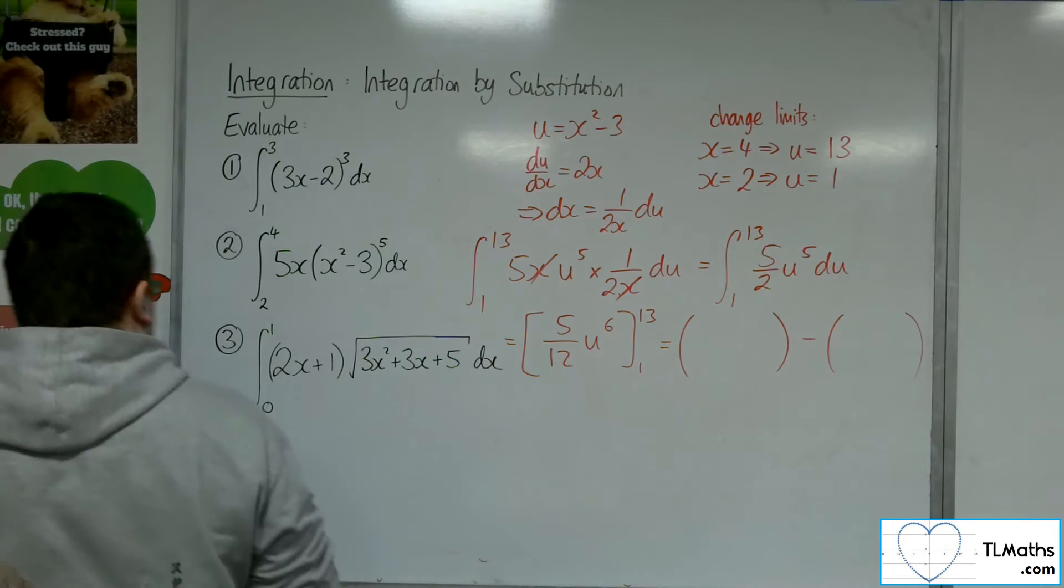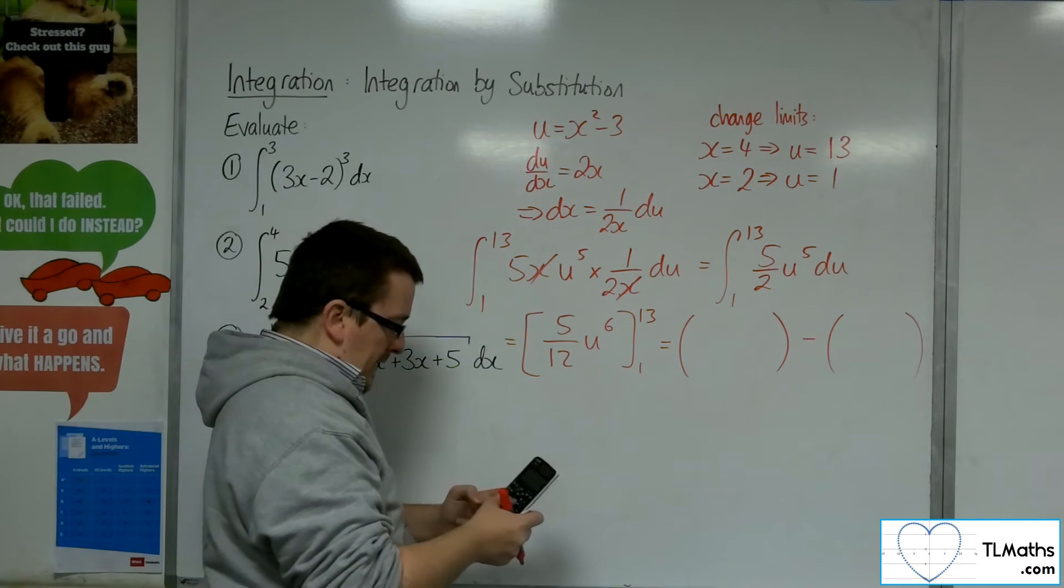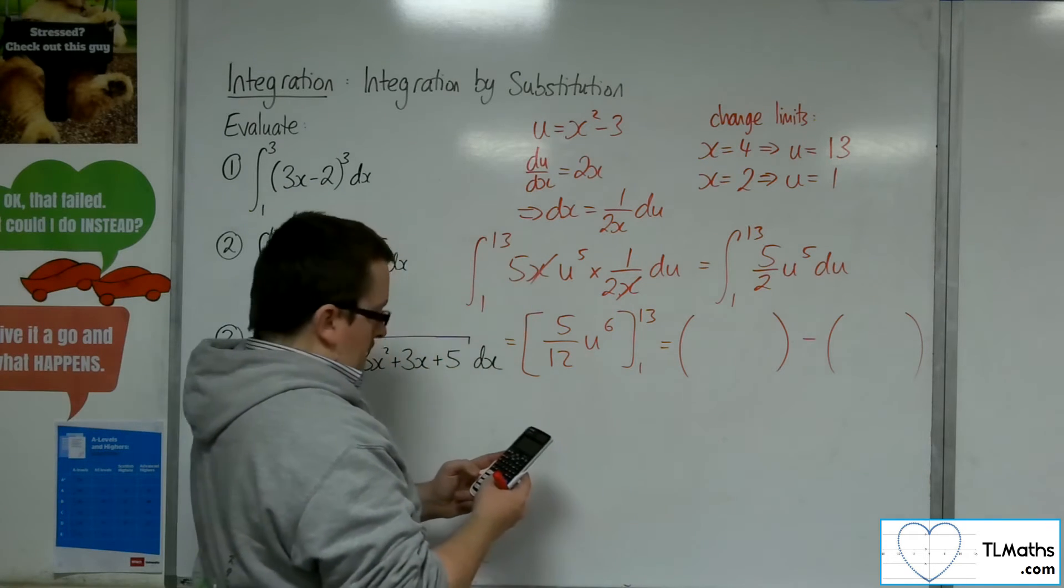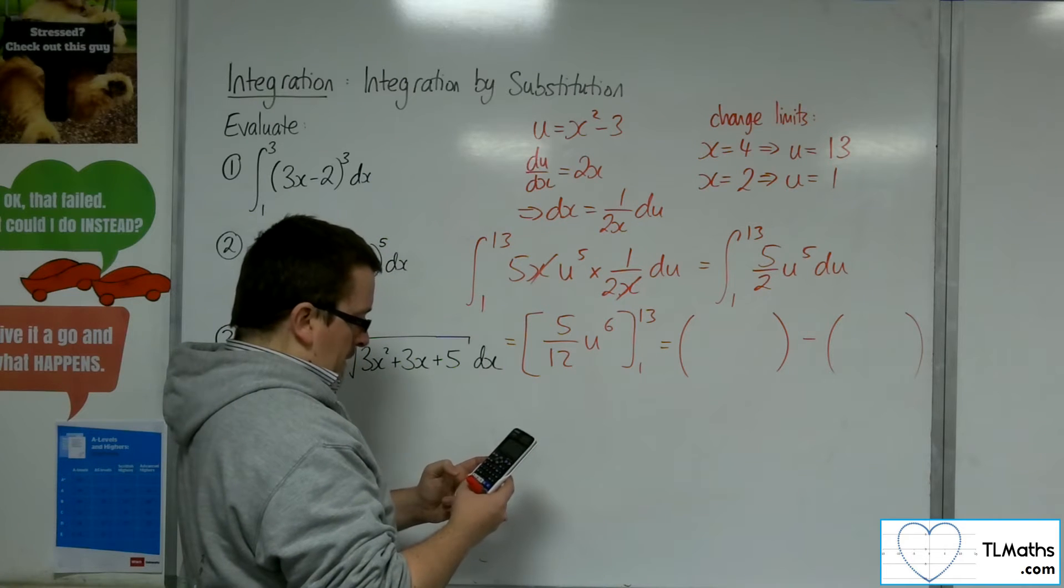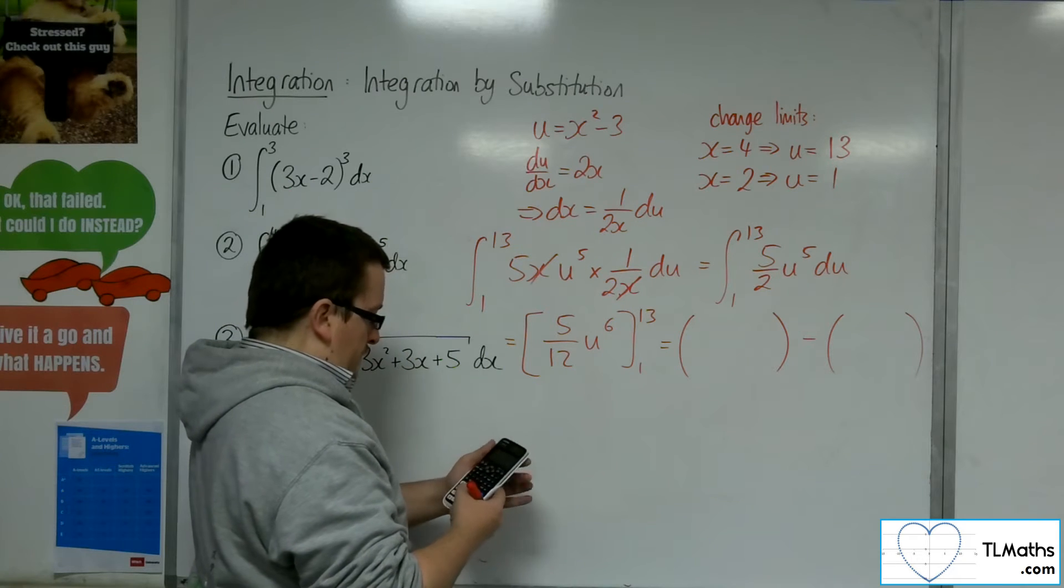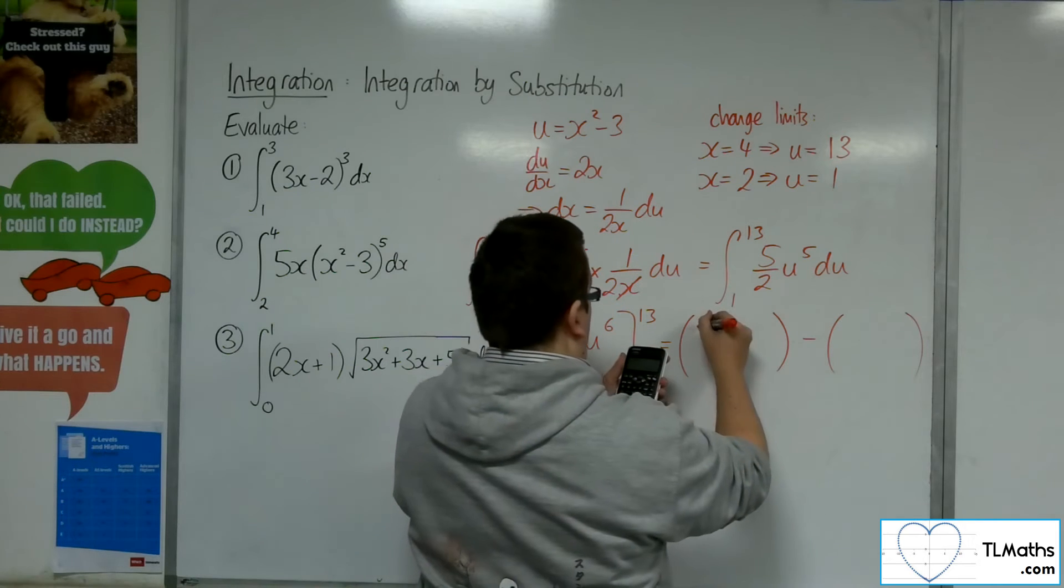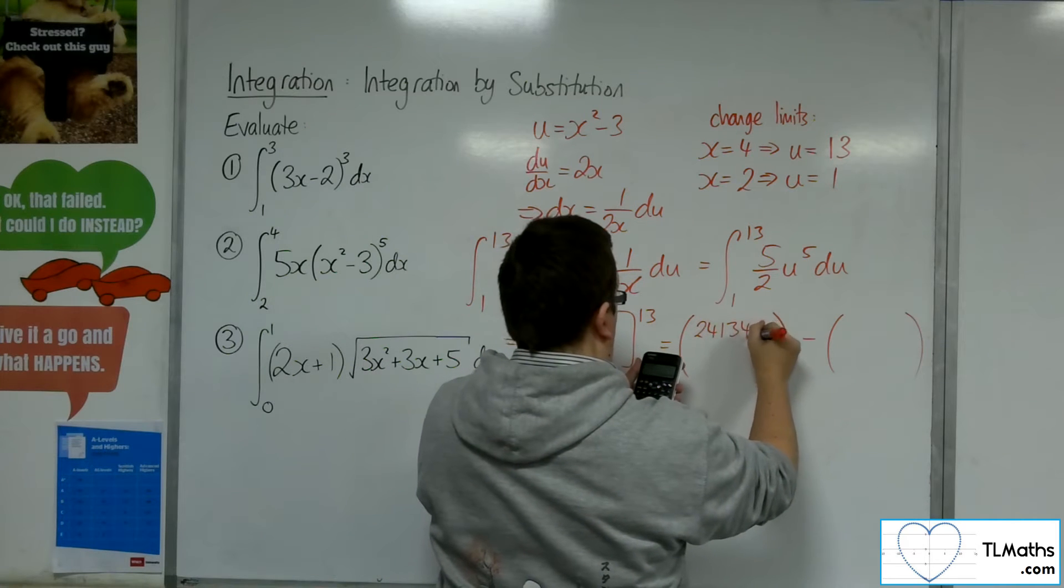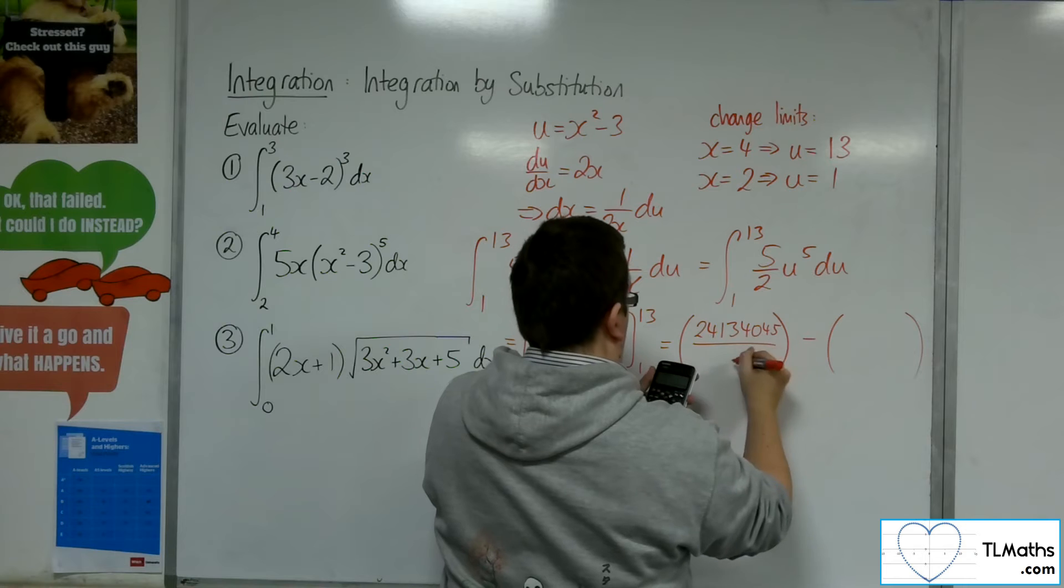Right, I don't know what 13 to the power of 6 is. Not a particularly nice number. So it is 4,913,045 over 12.